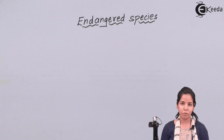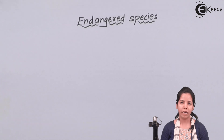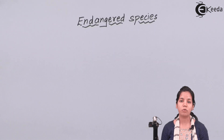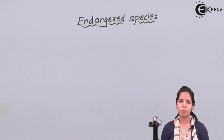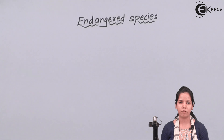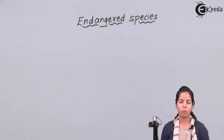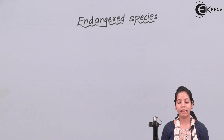So endangered species are those organisms whose count is really, really low. In the animal kingdom, an example of this could be the white tiger, whose population is really, really low, and certain species of tortoise whose population has greatly reduced due to global warming and such factors. Now, the United Nations organization has a sub-body which is the IUCN.